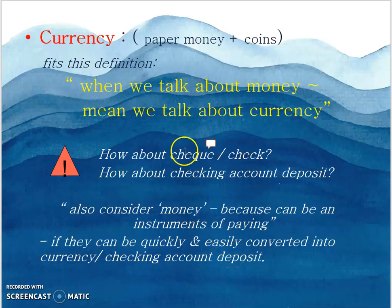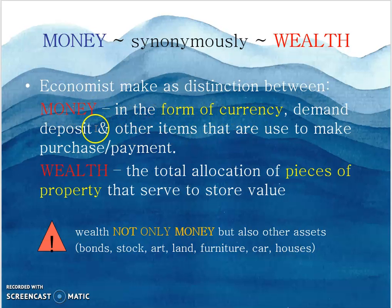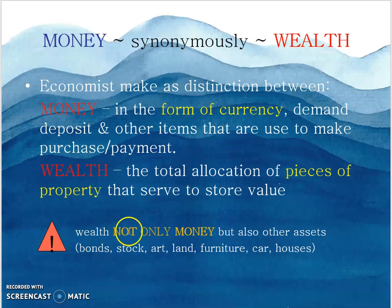If you want to buy something, you can issue a check and automatically you are buying that goods or services. Economists make a distinction between money and wealth. Money is in the form of currency, demand deposits, and other items used to make purchases. But wealth is the total collection of assets that serve to store value — not only money but also bonds, stocks, art, land, furniture, cars, and houses.